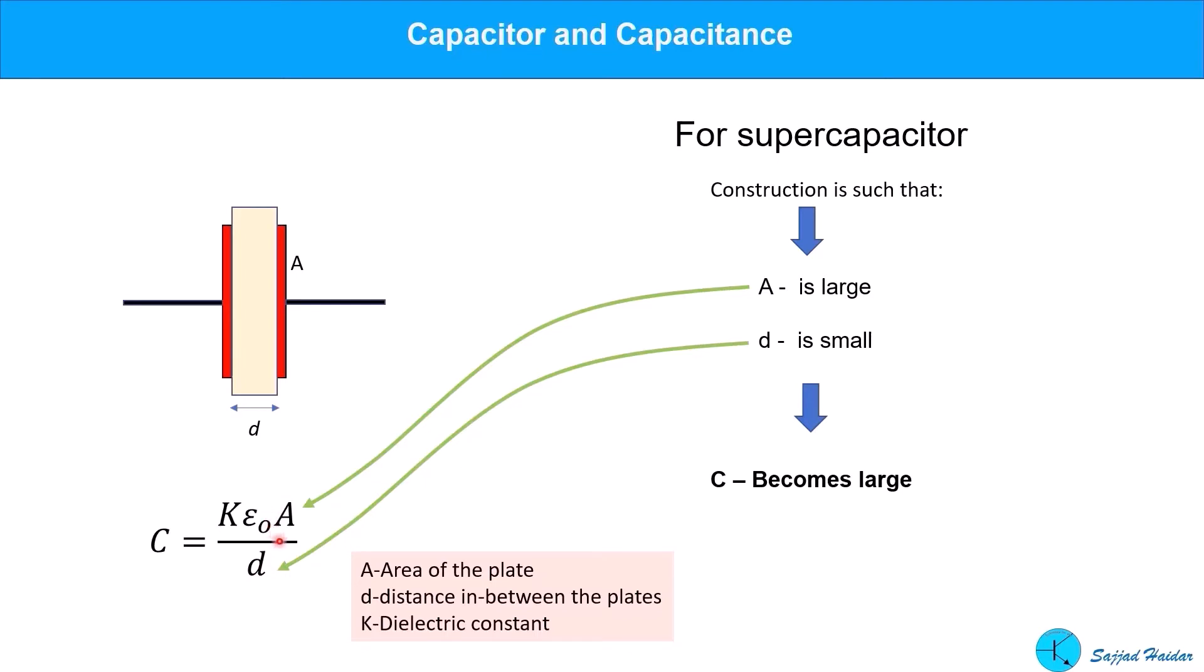Here, D is the separation between these two plates, and A is the area of the plates. As you can see from the equation, as A is large and D is small, C becomes very, very large. This is what is done inside a supercapacitor.